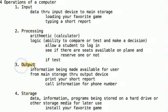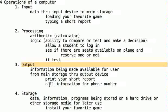Output is when you take the newly created information and you make it available to the user. The information is going to come from main storage and flow through an output device to the user. When you print a short report, it goes from main memory to a printer. When you call information and ask for a phone number and it gives you the phone number back, that's output — getting information from main memory through the appropriate output device so the user can use it.